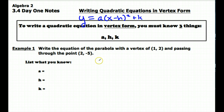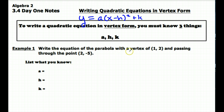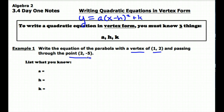In each of these three examples we're going to look at, I'm going to give you different information about the parabolas and we're going to use that information to determine what a, h, and k are. So in example one, I'm giving you the fact that the parabola has a vertex at (1, 2), and the parabola is also passing through the point (2, -5).